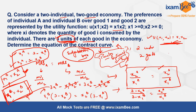To summarize the approach: I found the MRS for both individuals, equated them, and applied the binding constraints — x1a + x1b = 3 and x2a + x2b = 3 — to determine the allocations where both MRS values are equalized. This gives the full contract curve.